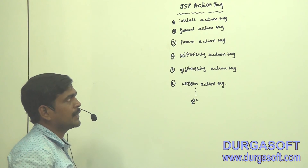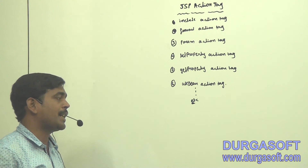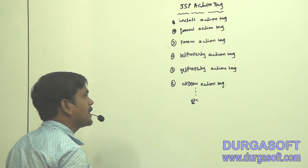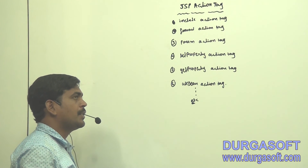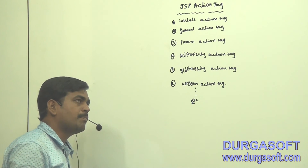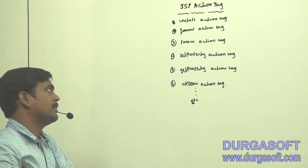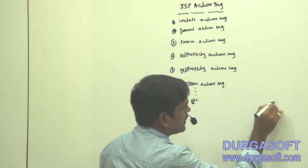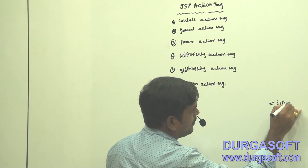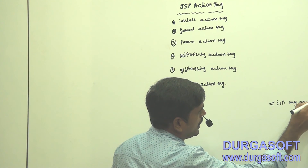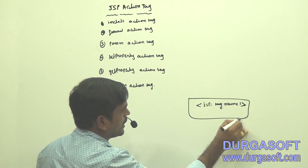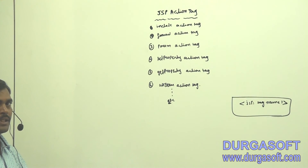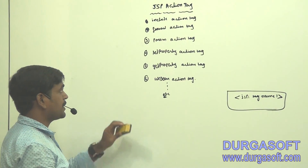Now we will see the JSP action tags. First we will see the include action tag. Whenever we use this action tag, the advantage is eliminating some portion of the Java code inside the JSP page. Before using these tags we use the prefix jsp colon tag-name — like that we can use JSP action tags.